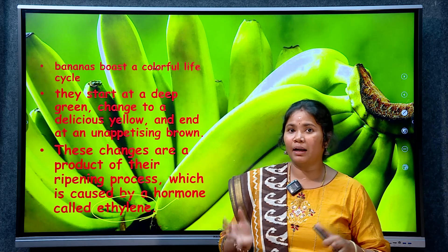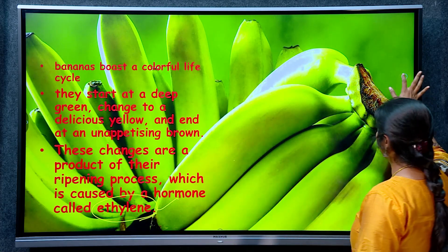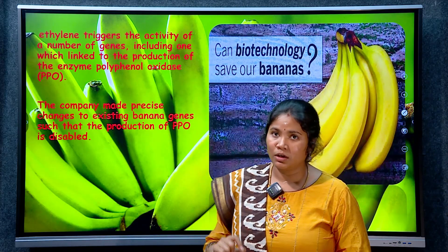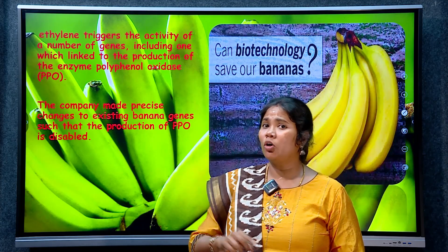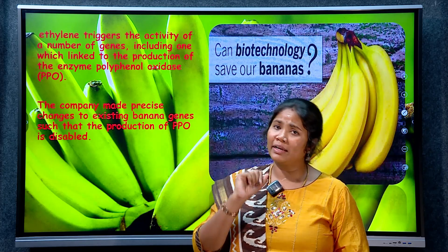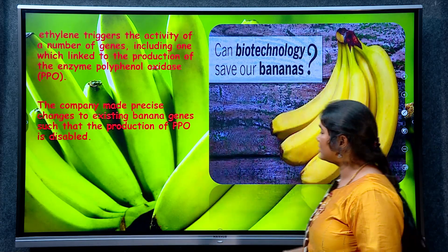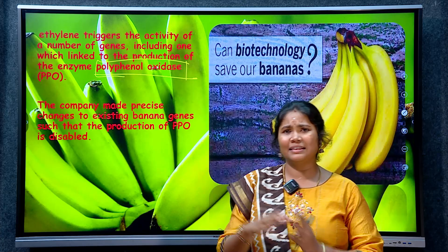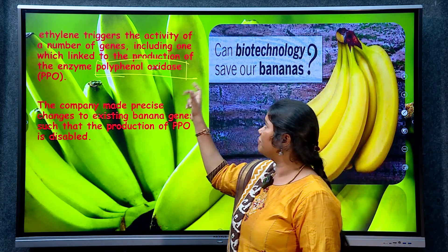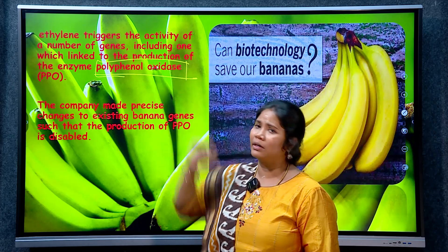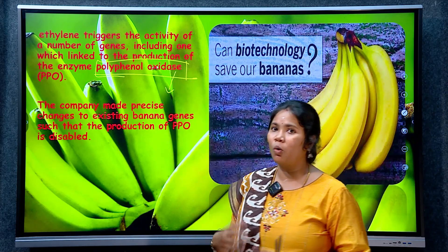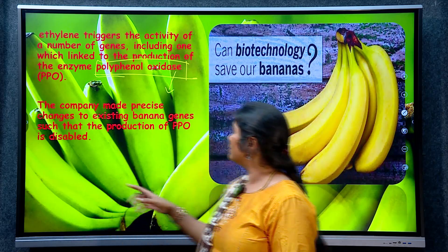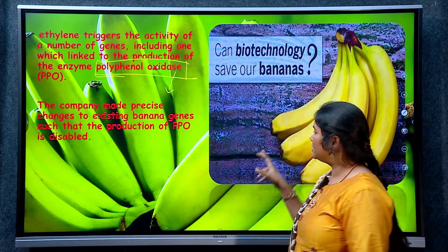The high ethylene secretion in bananas triggers a particular enzyme — polyphenol oxidase. This enzyme is the culprit behind the over-ripening of bananas: it causes the brown color and makes the fruit unappetizing. The main reason for banana food waste is polyphenol oxidase, which is triggered by ethylene secretion.